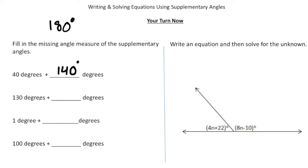So this first one: 40 degrees + 140 degrees adds up to 180. Here, 130 degrees + 50 degrees. 1 degree + 179 degrees. And then 100 degrees + 80 degrees for that one.